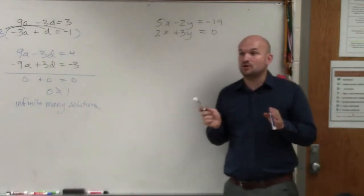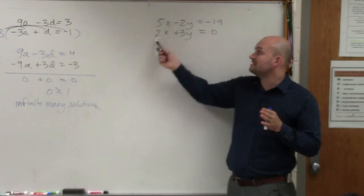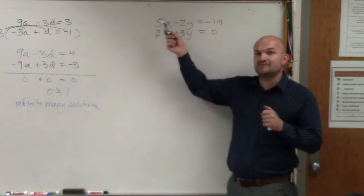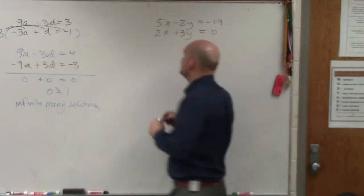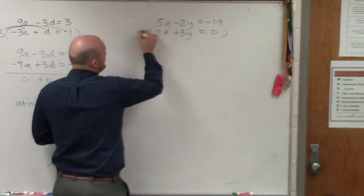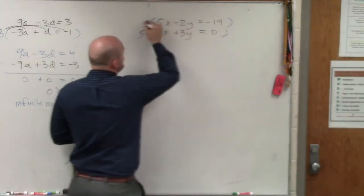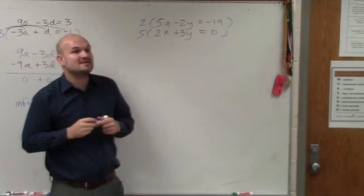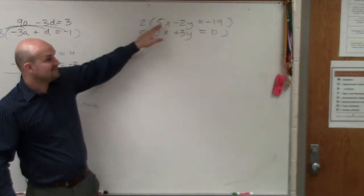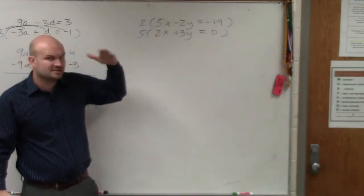So the least common multiple of my coefficients, 2 and 5, is 10. So I need to multiply this equation by 5 and the top equation by 2. Now, if you multiply by 5 and 2, you're going to have 10x and 10x, which you could subtract the equations.